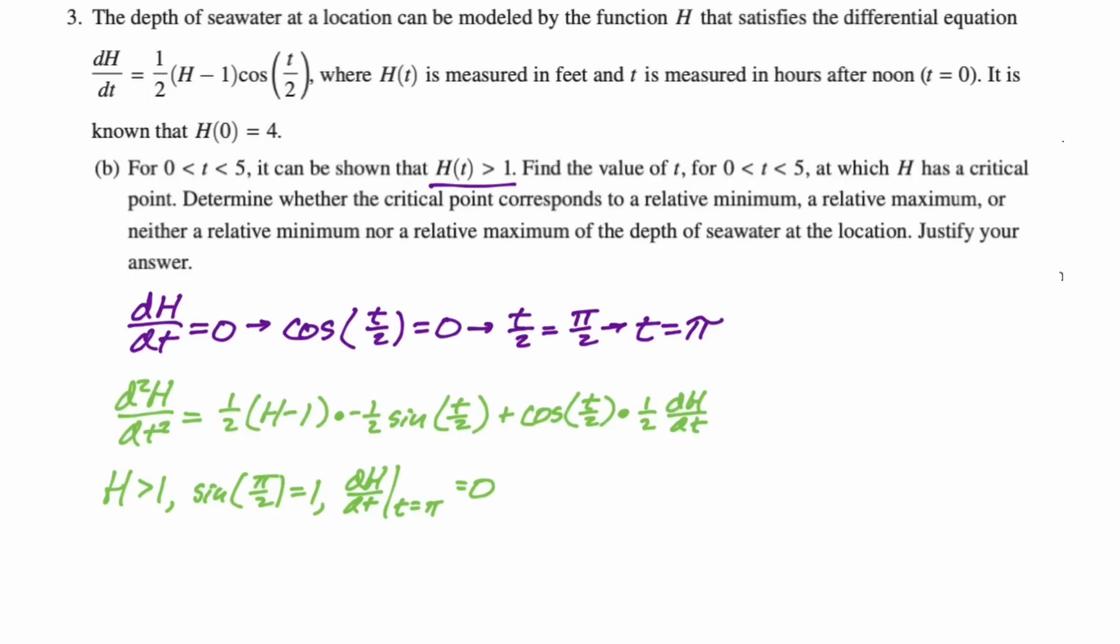The cosine t over two times one half times dh/dt, that's just zero. So we have one half times a positive number times negative one half times one. So one half times negative one half is negative one fourth times a positive number. So we can conclude that the second derivative is definitely a negative number on this interval. We don't even know what it is. We just know that it's negative at pi. And so if the first derivative is zero, the second derivative is negative.